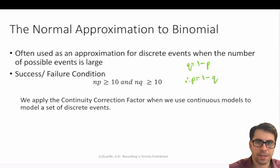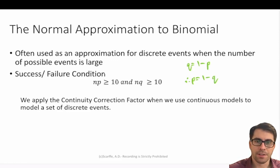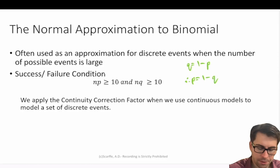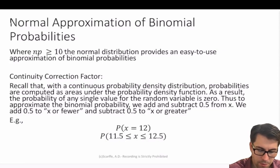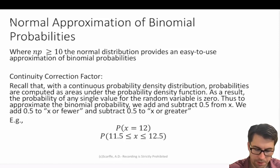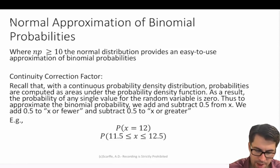Because the normal distribution is a continuous probability model and the binomial is a discrete probability model, we need to apply the continuity correction factor when using continuous models to model discrete events. With a continuous probability density distribution, probabilities are computed as areas underneath the curve, and the probability for any single value of the random variable is zero. To approximate the binomial probability we add and subtract 0.5 from x — we add 0.5 for x or fewer and subtract 0.5 for x or greater.